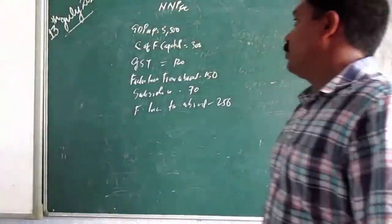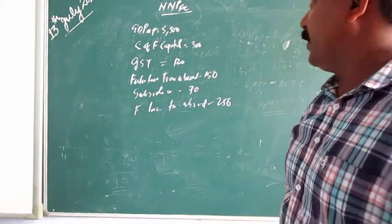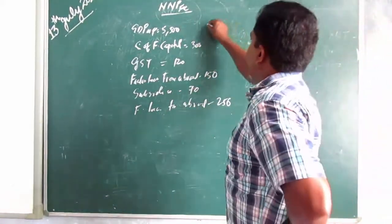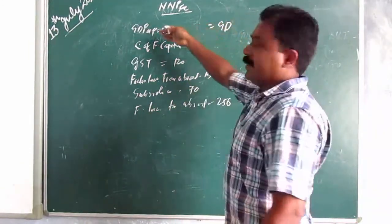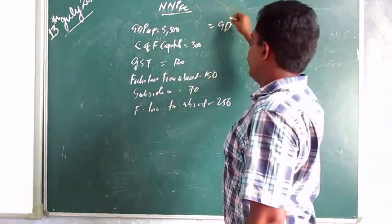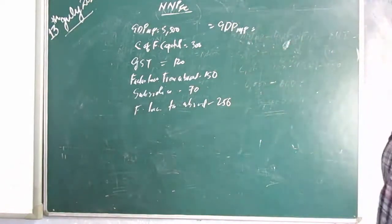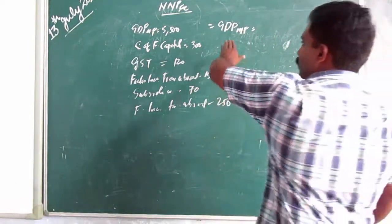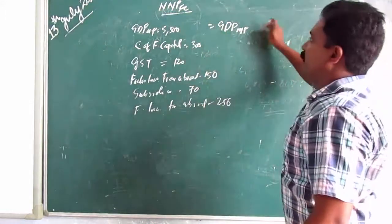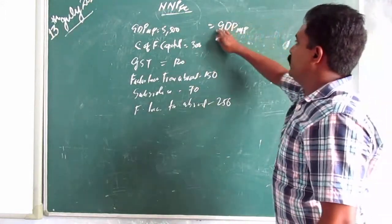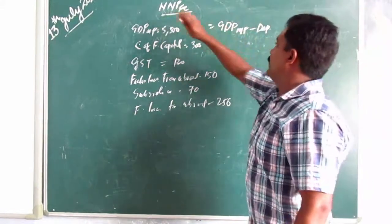We need to find NMPFC. The highest value given is GDP_MP. Now see the connection: gross to net — the difference is depreciation, so you reduce depreciation from it to make it net. Then domestic to national — you need to add NFIA to make domestic income into national income.